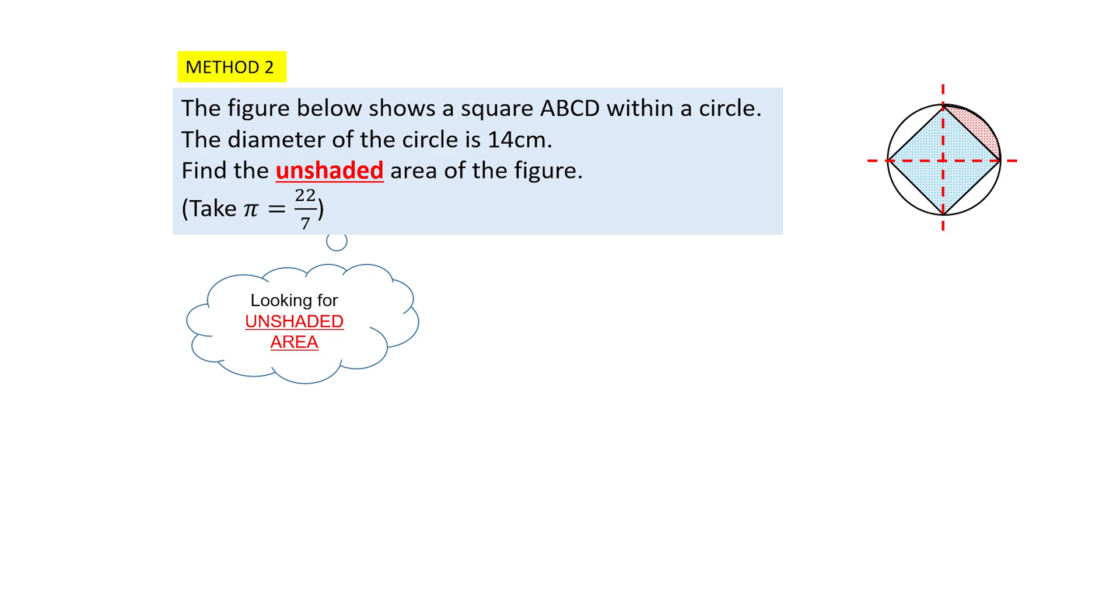So before we find the quadrant, let's check on the formula, which is quarter pi r square. We need a radius. So let's take the diameter, divide by 2, and you get 7 cm. The area of the quadrant is 1 quarter times pi times r times r. So the answer is 77 over 2 square centimeters.